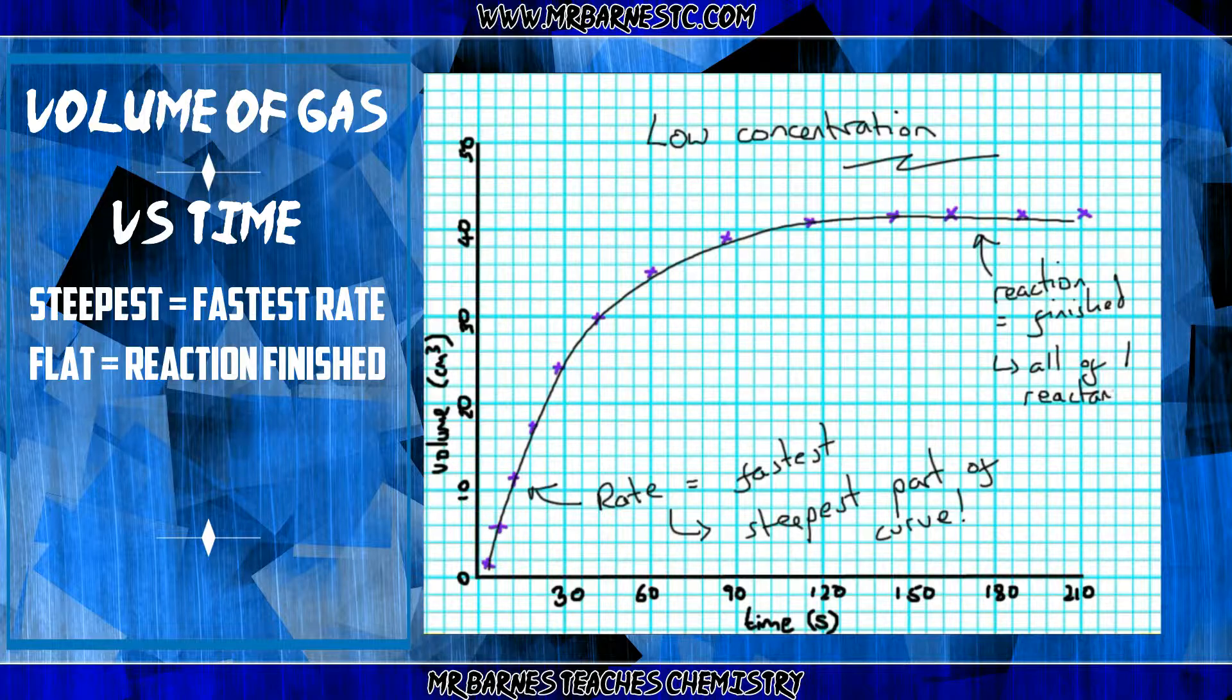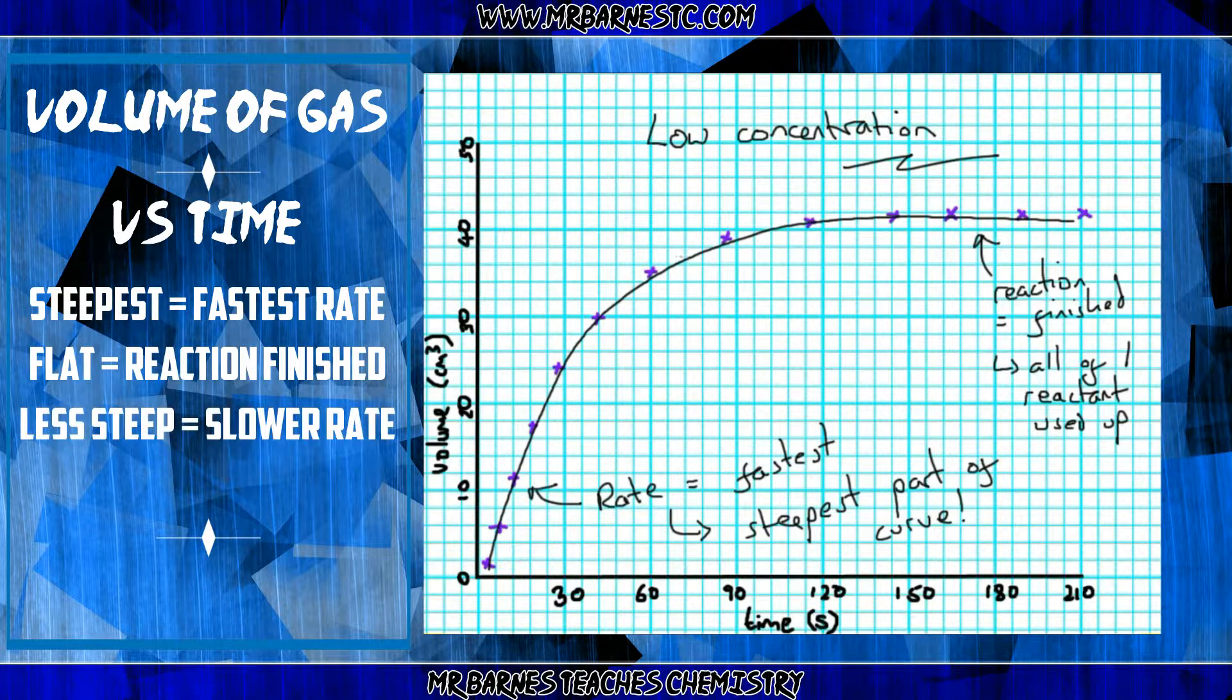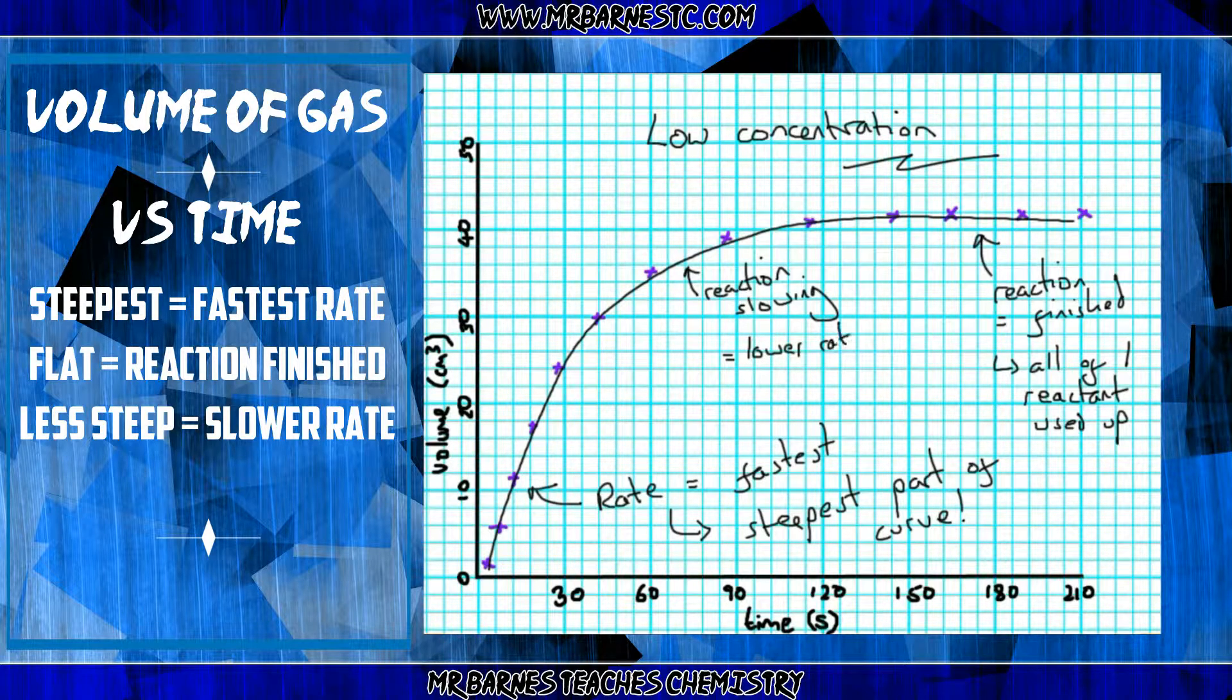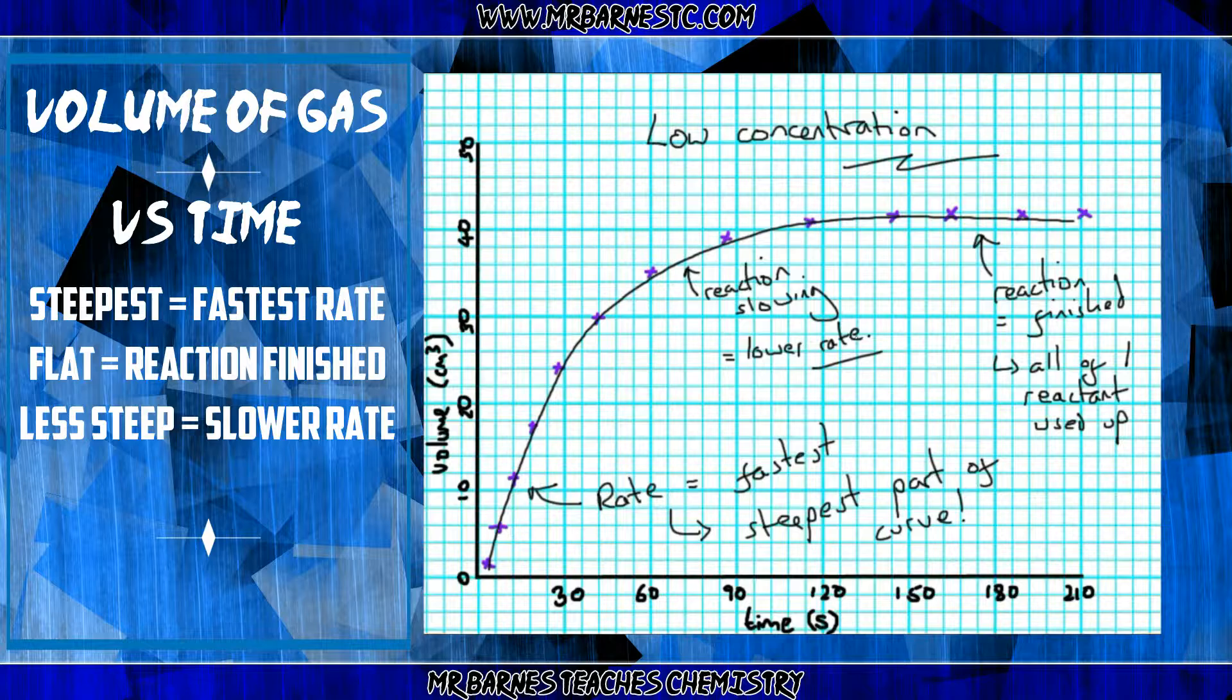At least one of the reactants has been used up. And when the graph starts to shallow, starts to become less steep, the reaction is slowing. Therefore you have a lower rate of reaction there. That's because you have less reactants and more products, so there are less reactions going on.